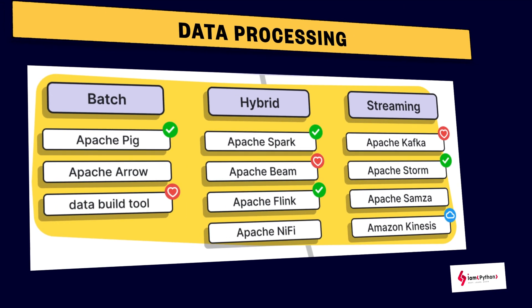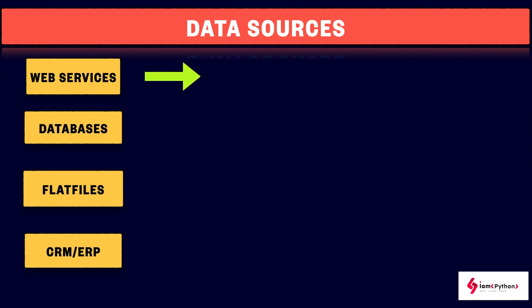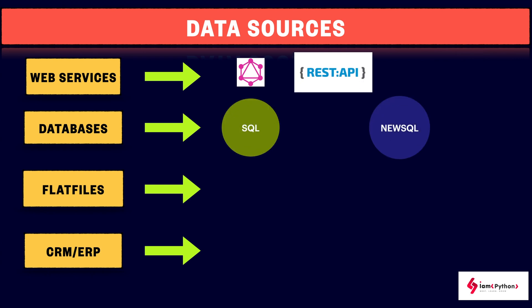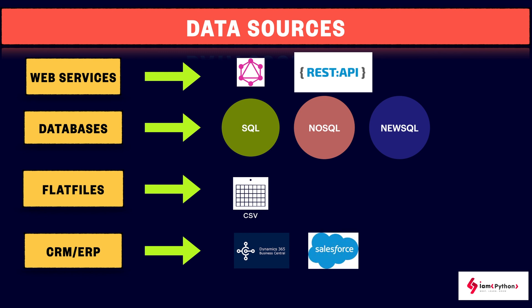Coming to the most important topic: data sources. We get data through web services, databases, flat files, and CRM tools. Web services include GraphQL and REST APIs. Databases include SQL, NewSQL, and NoSQL. Flat files include CSV and other formats. CRM tools include Salesforce, Microsoft Dynamics 365 Business Central, and SAP CRM. There are many sources; these are just a few examples.